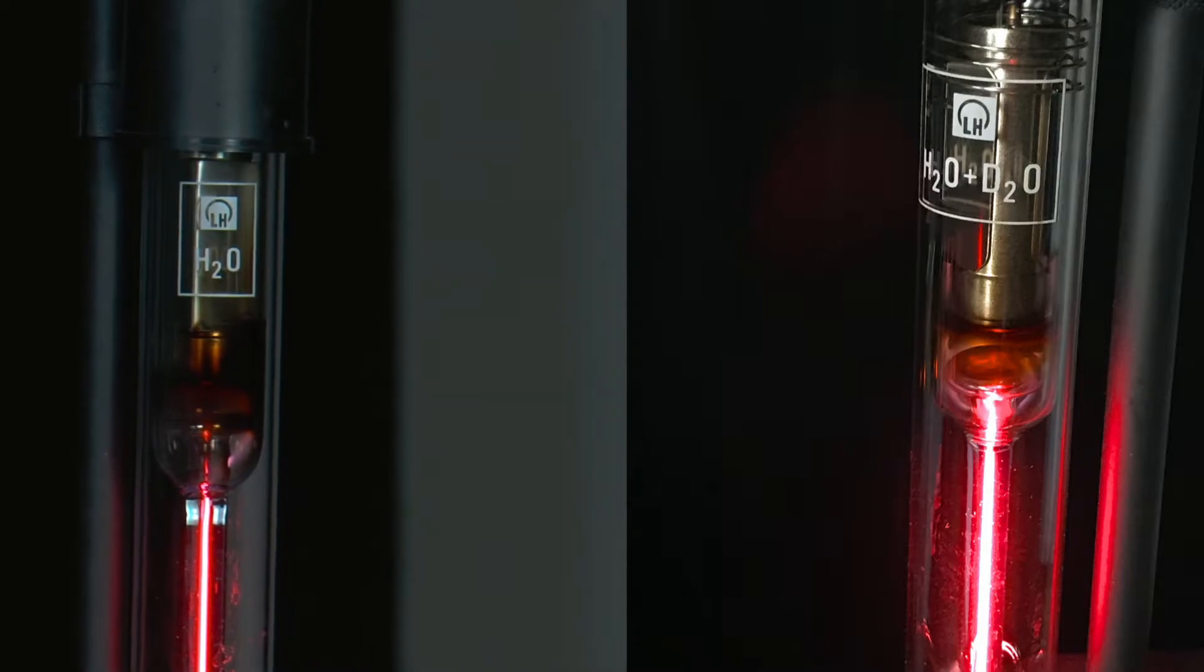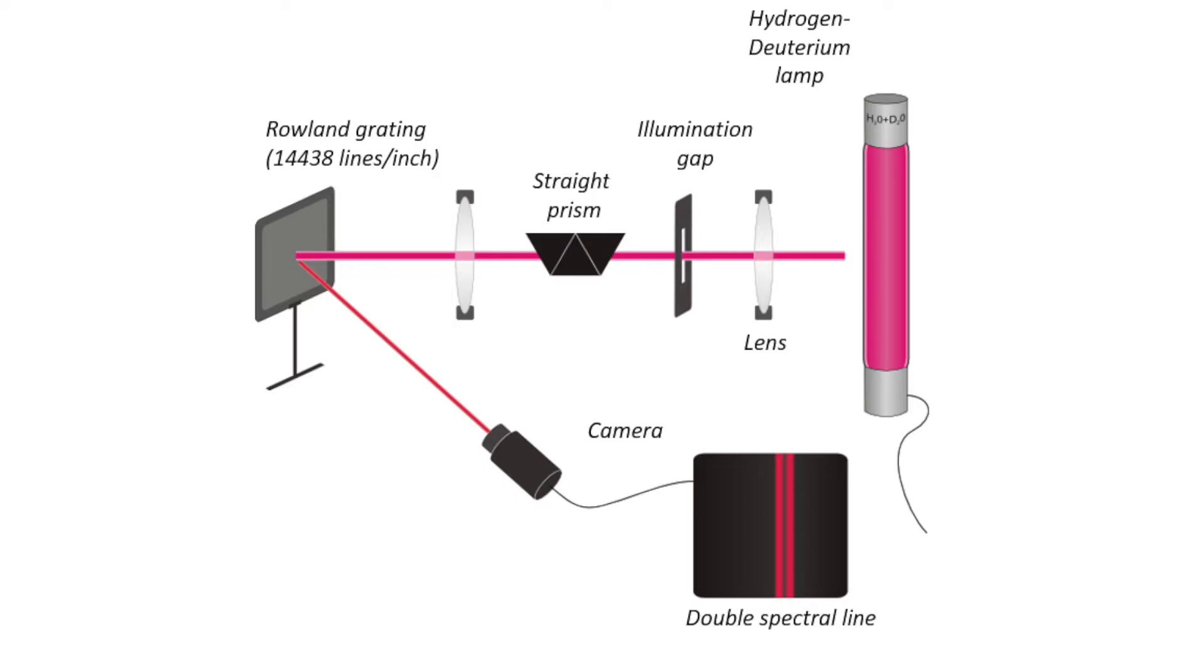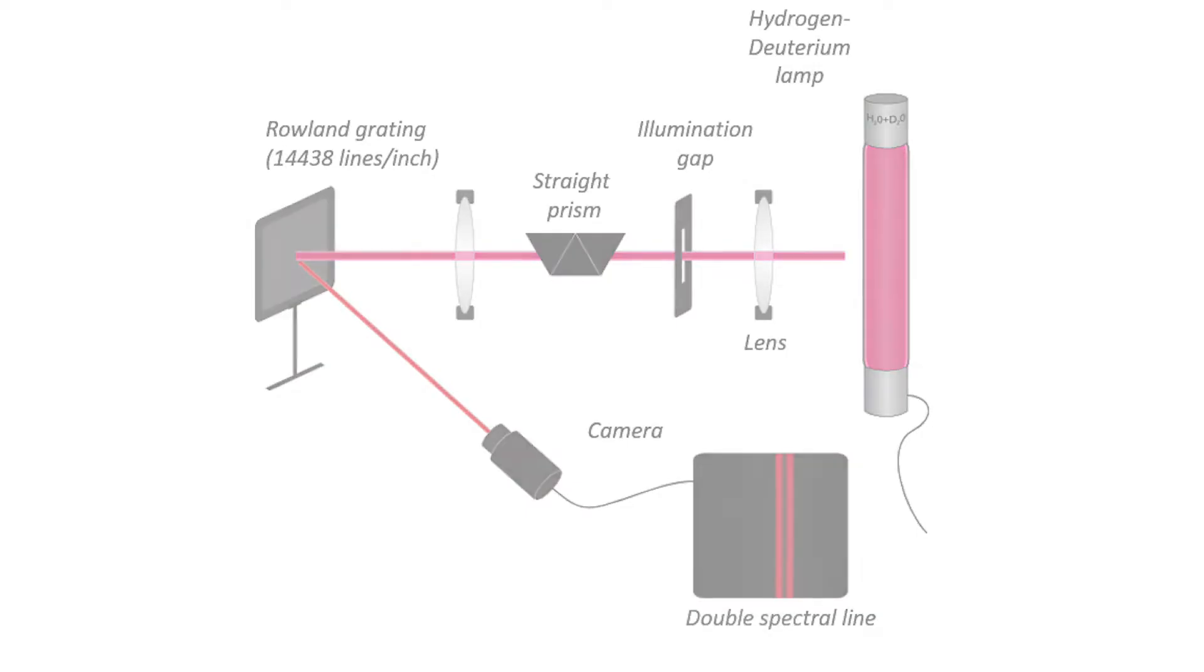To visualize the spectral lines of hydrogen, the light of the hydrogen lamp is sent through an illumination slit. The light is then reflected on a Rowland grating with 14,438 lines per inch.